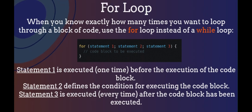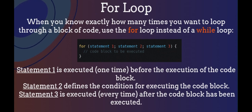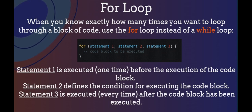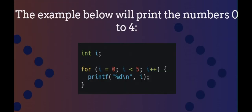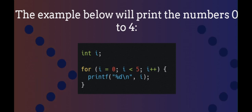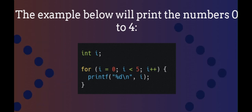For loop. When you know exactly how many times you want to loop through a block of code, use the for loop instead of a while loop. In the syntax: Statement 1 is executed one time before the execution of the code block; Statement 2 defines the condition for executing the code block; Statement 3 is executed every time after the code block has been executed. The example below will print the numbers 0 to 4. Statement 1 sets a variable before the loop starts (int i = 0). Statement 2 defines the condition for the loop to run — i must be less than 5; if the condition is true the loop starts over, if false the loop will end. Statement 3 increases the value (i++) each time the code block has been executed.